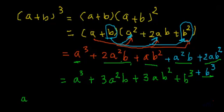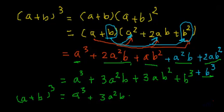(a + b) whole cube equals a cubed plus 3a squared b plus 3ab squared plus b cubed. This is the formula for (a + b) whole cube.